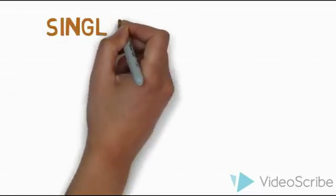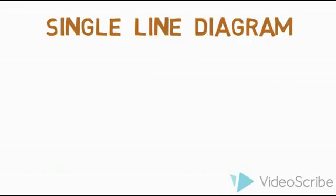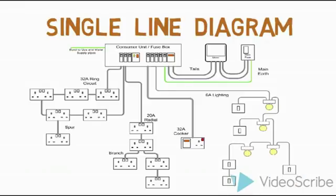We will create a single line diagram. We have to install the main meter. The meter connects to the breakers, and the breakers connect to the switchboxes and lights.